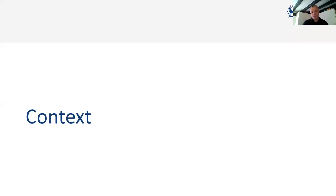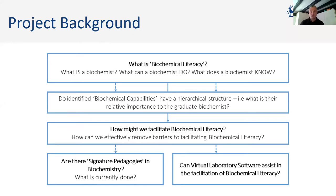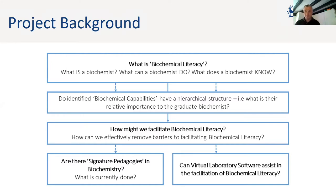We're going to start with the context. This flow chart diagram really shows the plan for Danny's thesis. Biochemical literacy links back to the concept of subject literacy, which has developed over the last 10 to 15 years. There are solid examples in higher education — chemical literacy and psychological literacy — where you're really asking: what does the student need to be able to do to be a practitioner in that subject? In this case, what is a biochemist? What does a biochemist do, and what do they need to know?